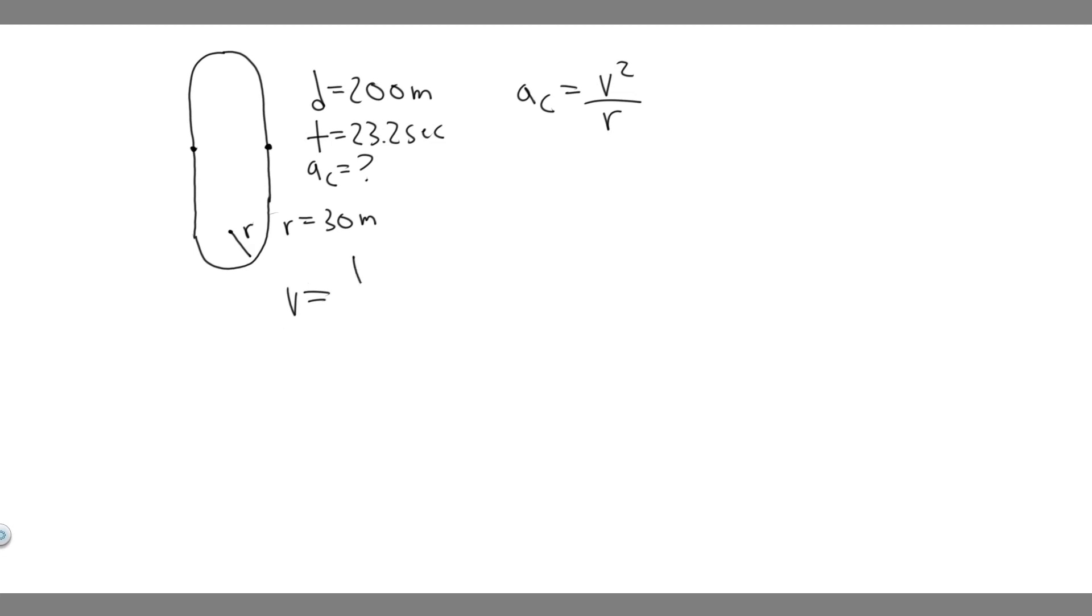We can solve for the velocity. We know velocity equals distance over time. And we know the distance he's going to run is 200 meters in 23.2 seconds and it's constant. So the velocity here is the same here.